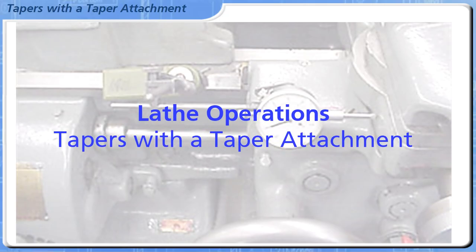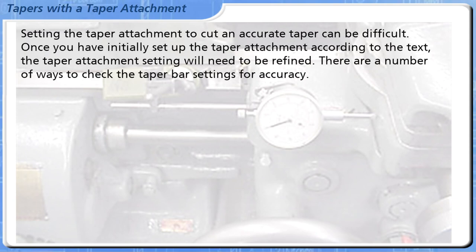Welcome to this lathe operations module on tapers with a taper attachment. Setting the taper attachment to cut an accurate taper can be difficult. Once you have initially set up the taper attachment according to the text, the taper attachment setting will need to be refined. There are a number of ways to check the taper bar settings for accuracy.